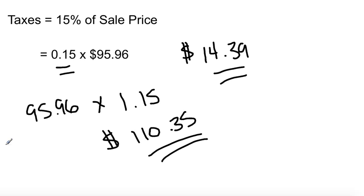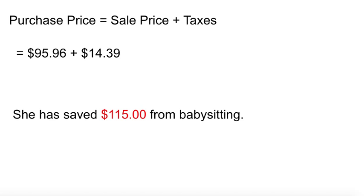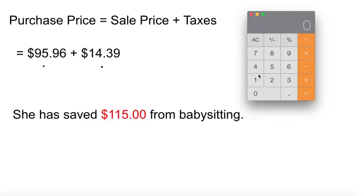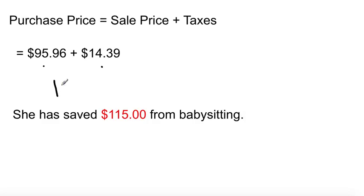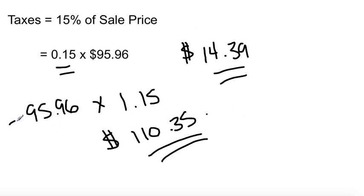Let's go through the final portion of the problem. The purchase price equals the sale price plus taxes. We took 20% off for the sale price, then added 15% for taxes. Verifying: $95.96 plus $14.39 equals $110.35 — the same total as before. Both methods give the same answer.